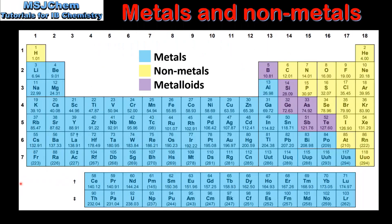We'll start by looking at the position of the metals and non-metals on the periodic table. The elements shaded in light blue are metals, the elements shaded in yellow are non-metals, and the elements shaded in purple are metalloids. The metalloids will be covered in more detail in a later video. The majority of the elements on the periodic table are metals, which can mainly be found on the left and in the middle. The non-metals are found on the right side. Note that hydrogen is a non-metal despite being located on the left in group 1.